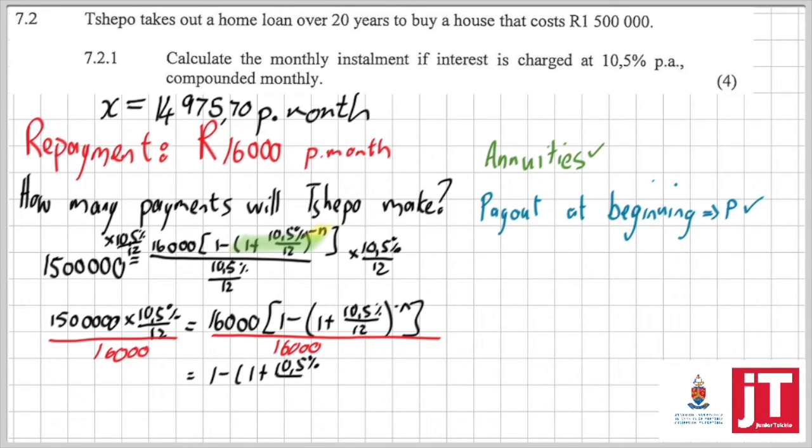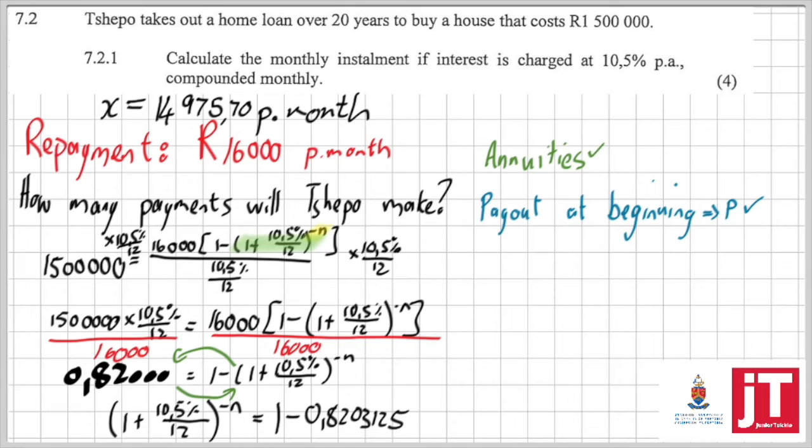That leaves me with that value of 0.82. Let me just write this as 0.82 dot dot dot. Now I have to remember that I am trying to isolate that negative n. So I am going to rewrite this in logarithmic form.